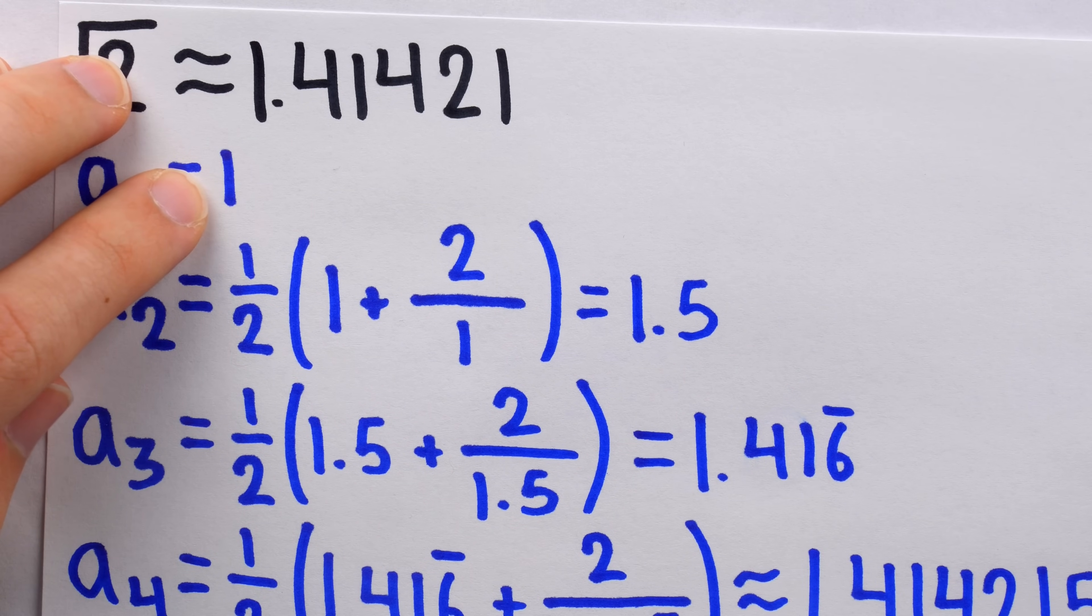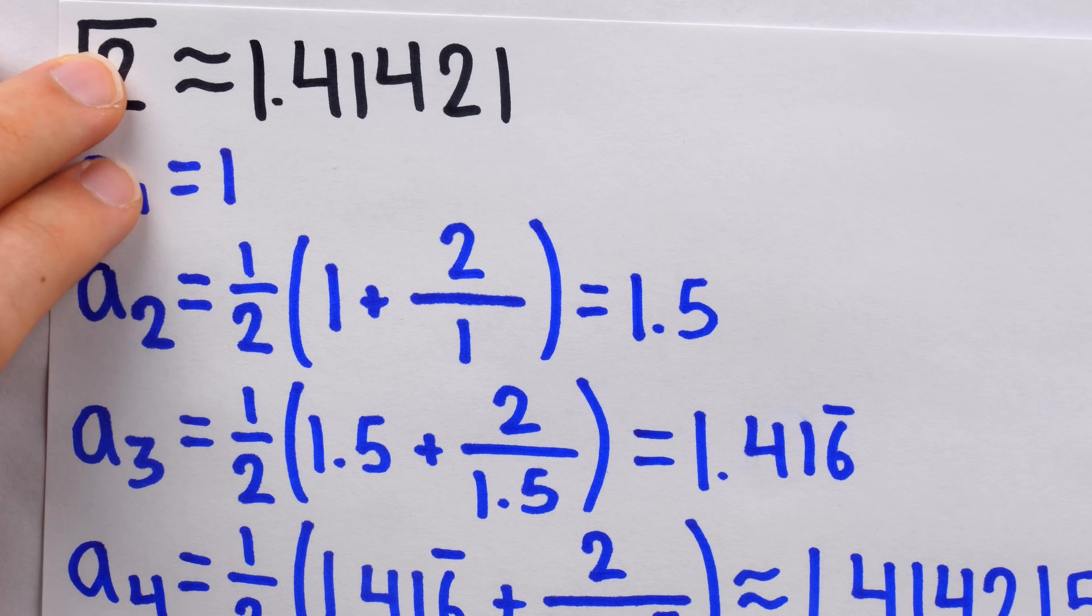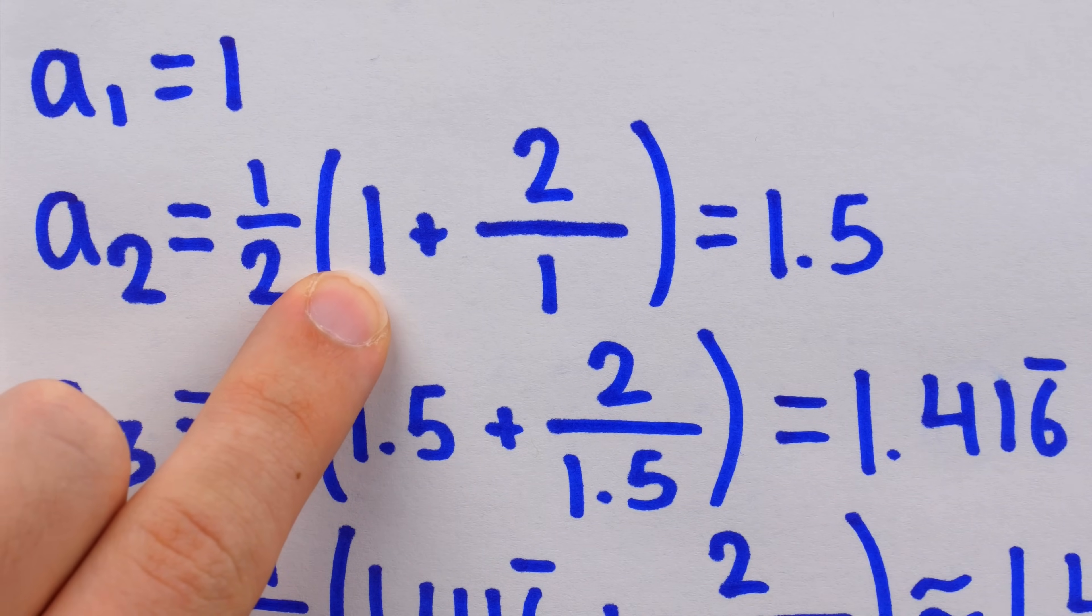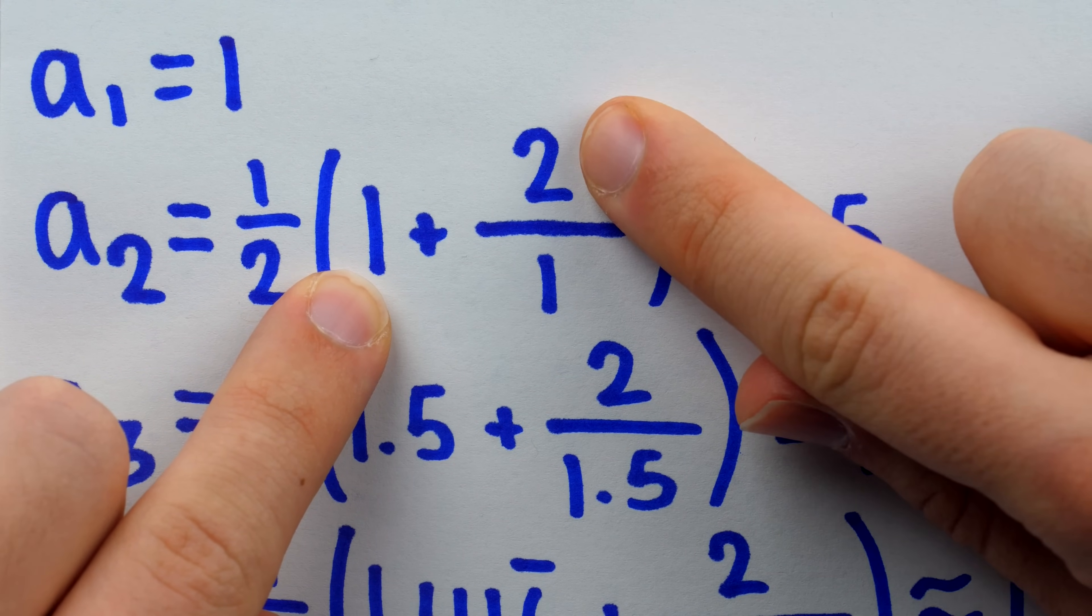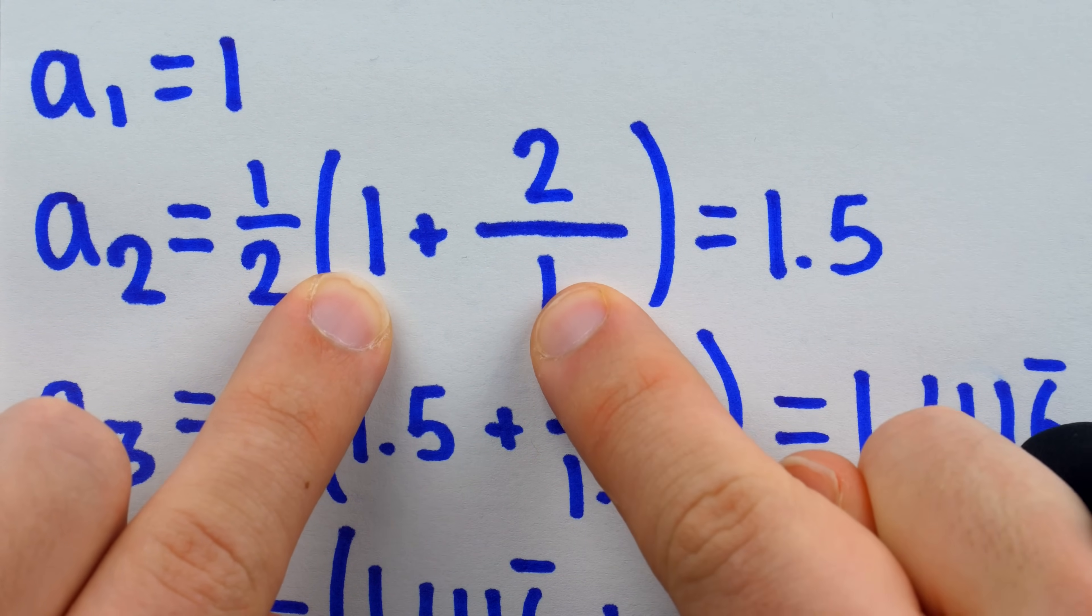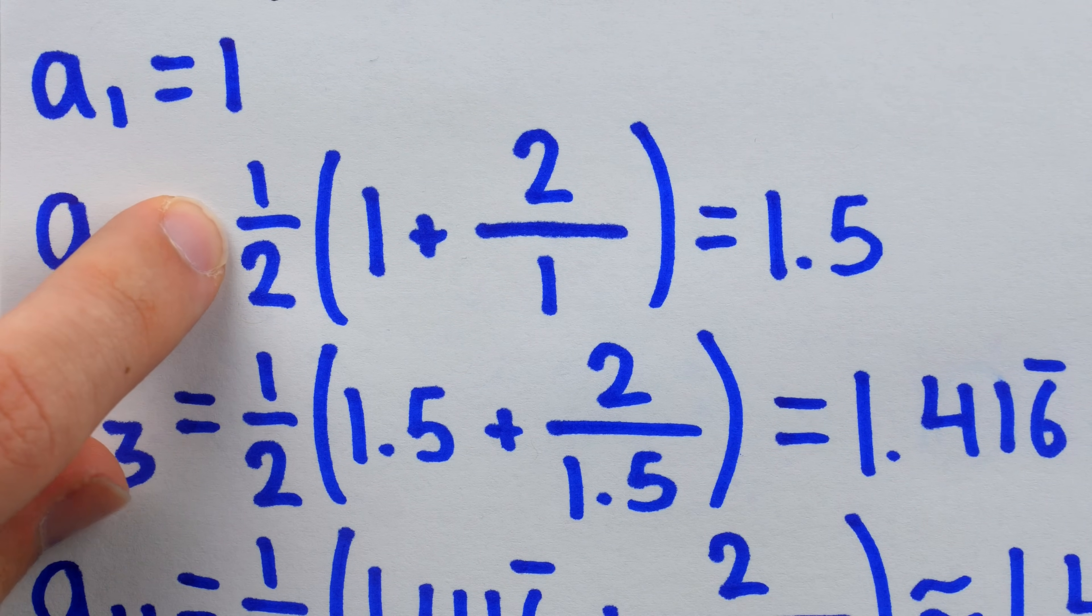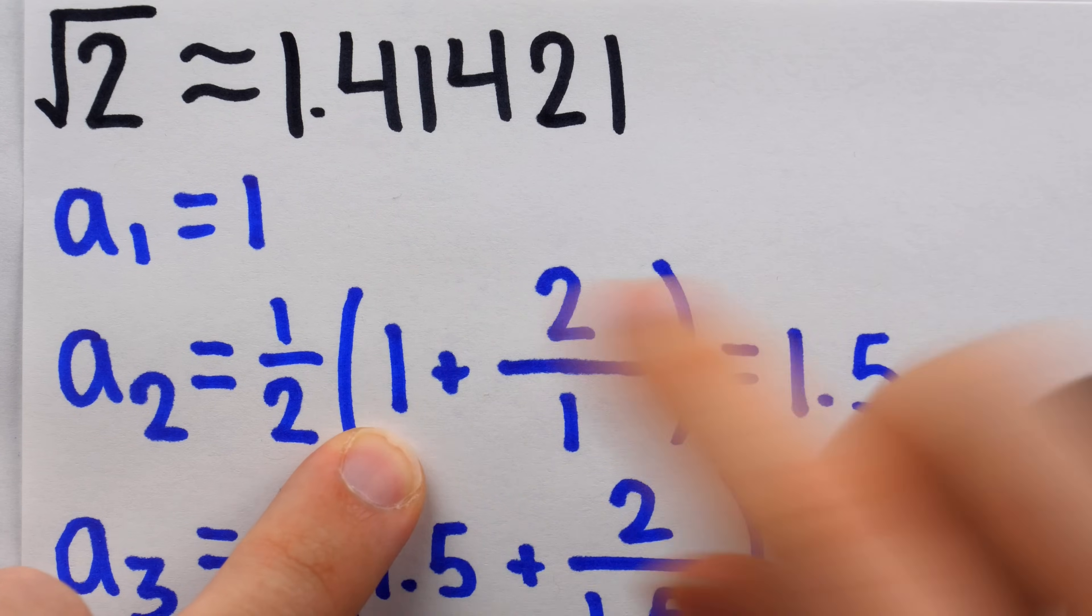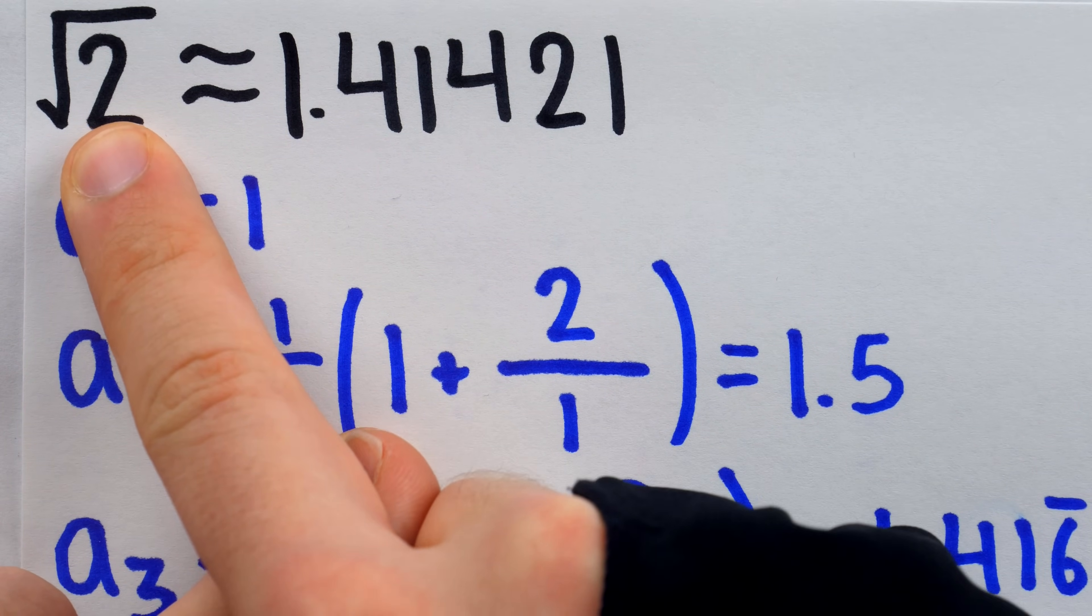Remember, our first guess is 1. And what Heron's method tells us to do to get the next term is to take that guess, and then add the number whose square root we're trying to approximate, divided by that previous guess, and cut that in half. Now, our first guess, 1, is an underestimate of the true value of the square root of 2.